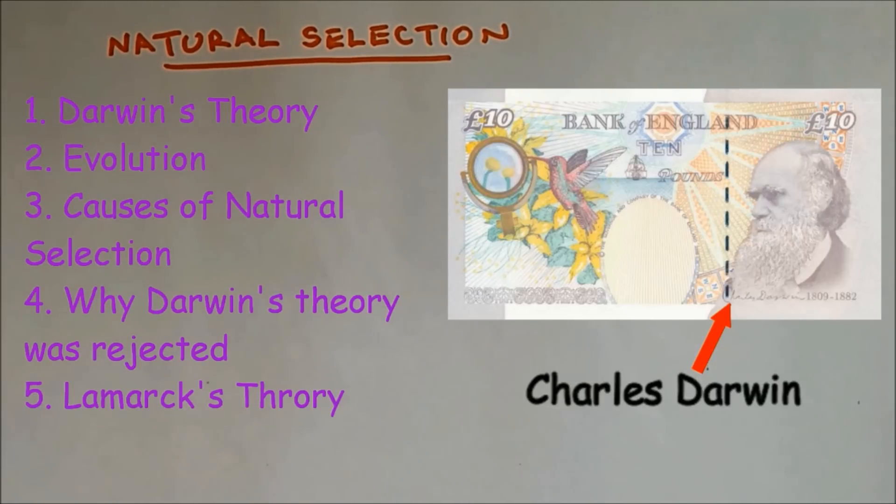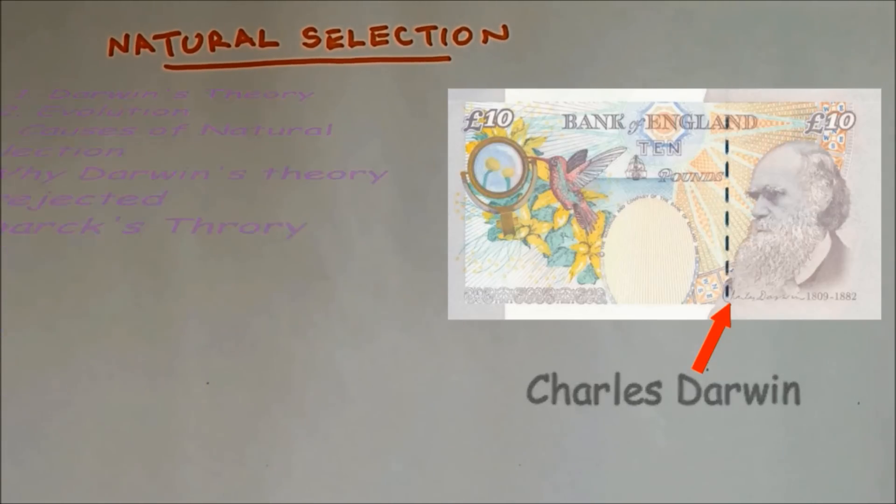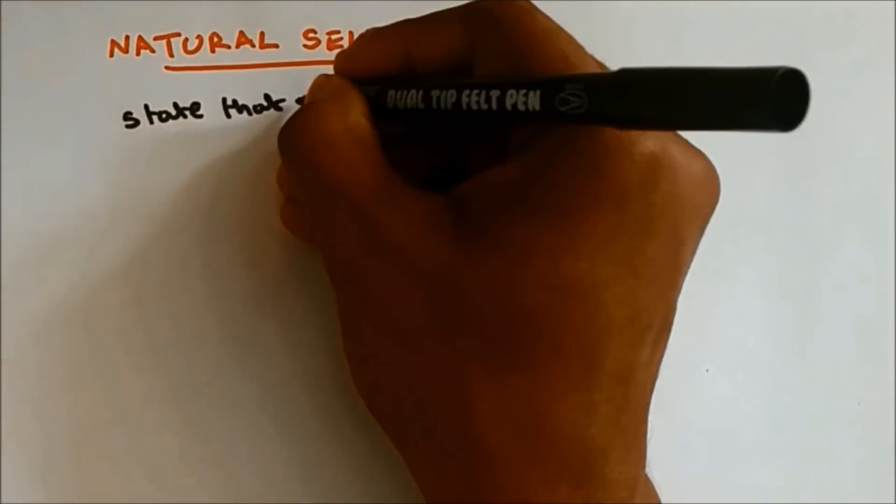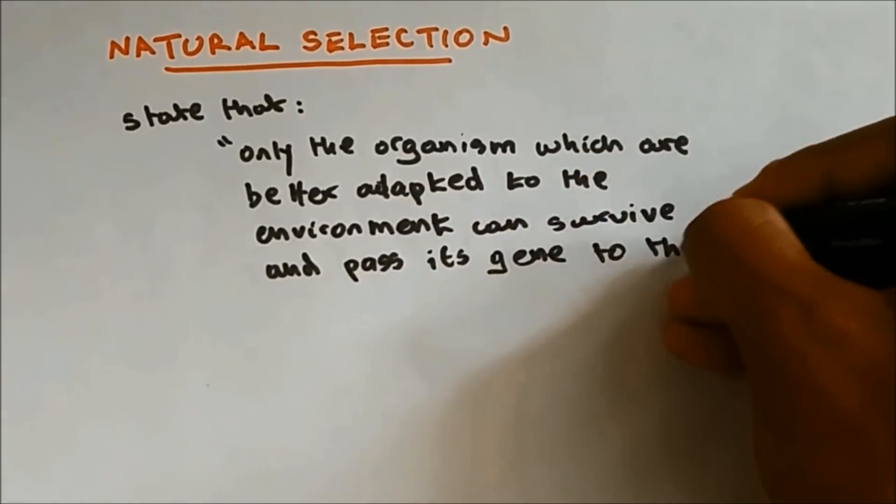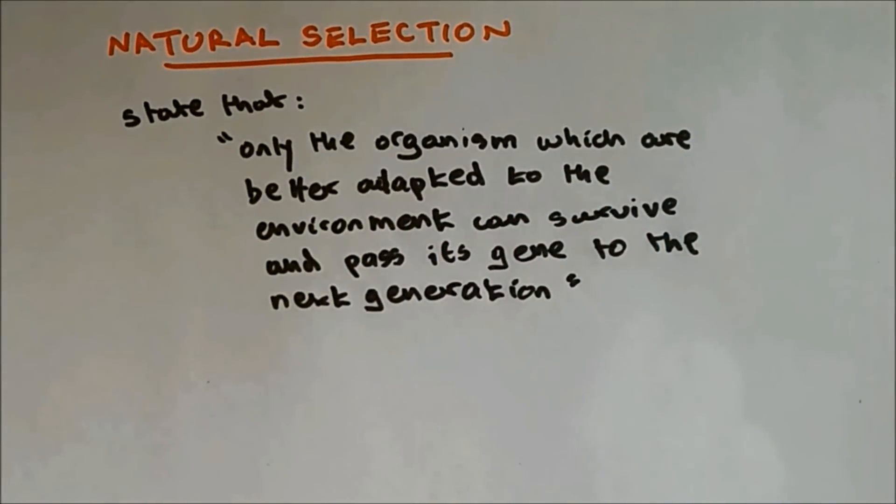So what is the theory of natural selection? Natural selection states that only the organism which are better adapted to the environment can survive and pass this gene to the next generation. So this is the theory of Charles Darwin.